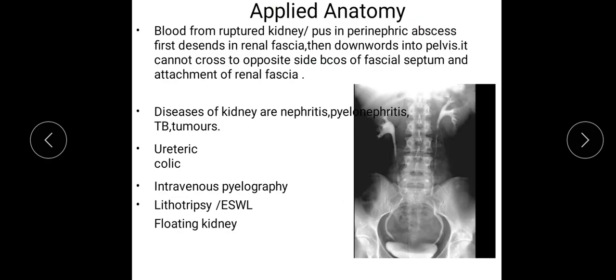Applied anatomy: blood from a ruptured kidney or pus in a perinephric abscess first descends within the renal fascia downwards into the pelvis; it cannot cross to the opposite side because of the fascial septum. Diseases of the kidney include nephritis (inflammation of the kidney), pyelonephritis, tuberculosis of the kidney, and tumors or cancers. There is also ureteric colic.